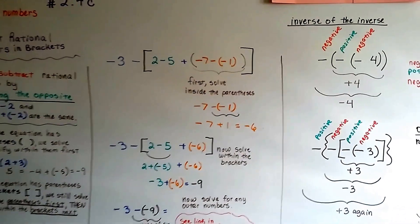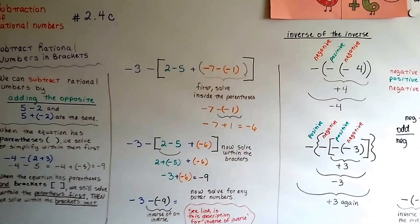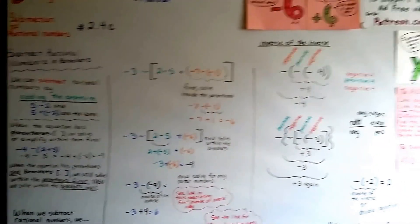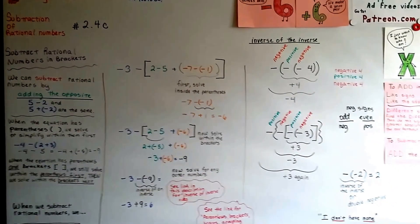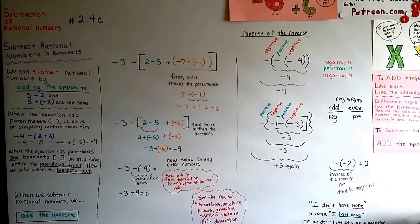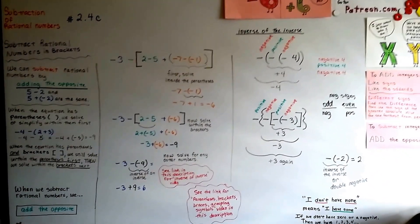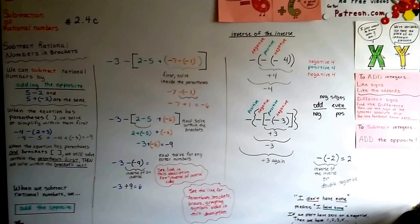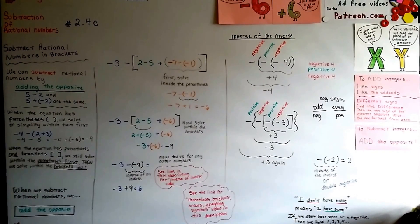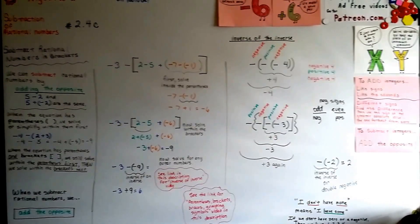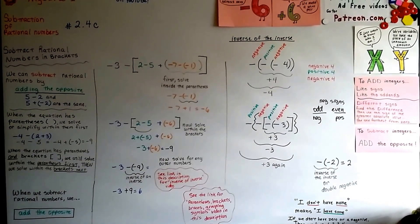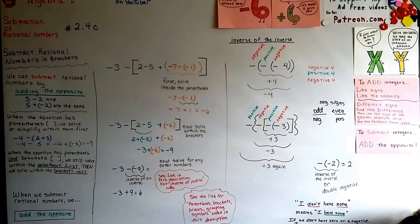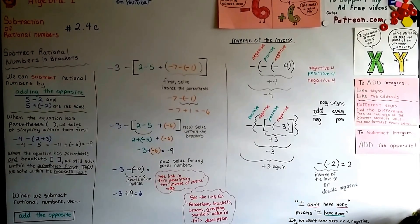We're going to move on to the next unit, 2.5a, and talk about multiplying rational numbers. I hope this was helpful — leave me a message if it helped you and let me know how you're doing. See you next video, bye!